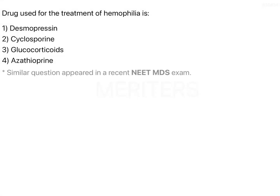The drug used for the treatment of hemophilia is desmopressin. Hemophilia is a bleeding disease caused by deficiency of Factor VIII, and we treat it with desmopressin. In this question we are going to learn a lot about desmopressin, as we have covered hemophilia across almost all subjects.